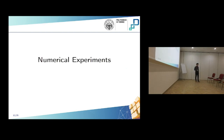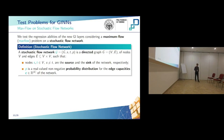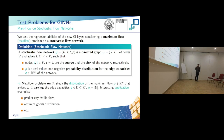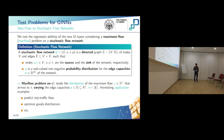Let's see some numerical experiments. We decided to test our new architectures on a maximum flow problem on stochastic flow networks. A stochastic flow network is a network based on a directed graph G with two nodes S and T — the source and the sink — and a probability distribution B that defines the edge capacities. The max flow problem with respect to this network is to study the distribution of the maximum flow phi arriving at sink T as the edge capacities vary, represented by a vector C in R^n where n is the number of edges. Applications include modeling city traffic flow and similar network optimization problems.